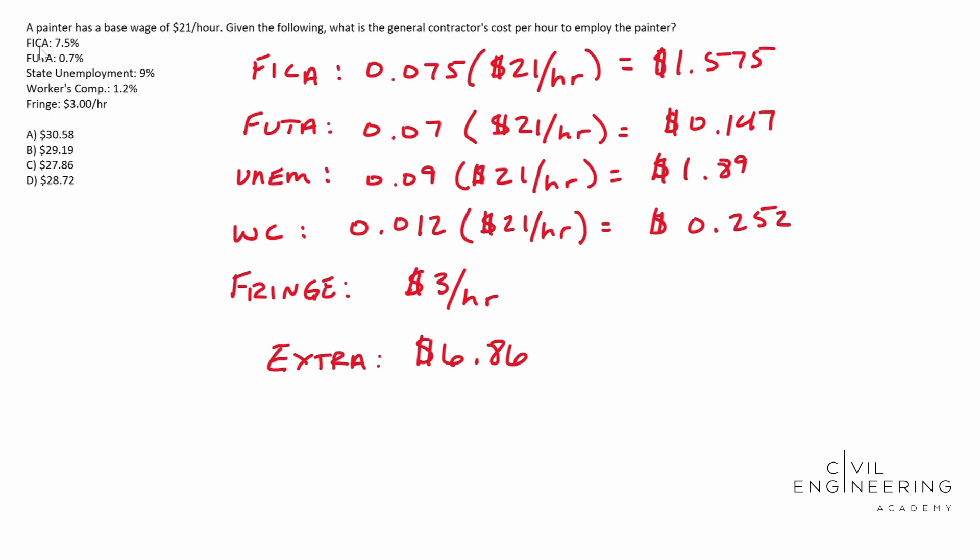And so with that said, we need to add our extras up with our base wage. And so this guy, our base wage ends up being $27.86 per hour.